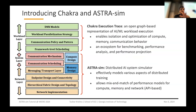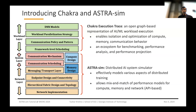Together, this is the ecosystem that gets created. Chakra Execution Traces is an open graph-based representation that enables isolation and optimization of compute, memory, and communication — an ecosystem for benchmarking, performance analysis, and performance projection. AstraSim is a distributed AI system simulator whose key goal is to allow a mix-and-match of different performance models for compute, memory, and network via a set of APIs.